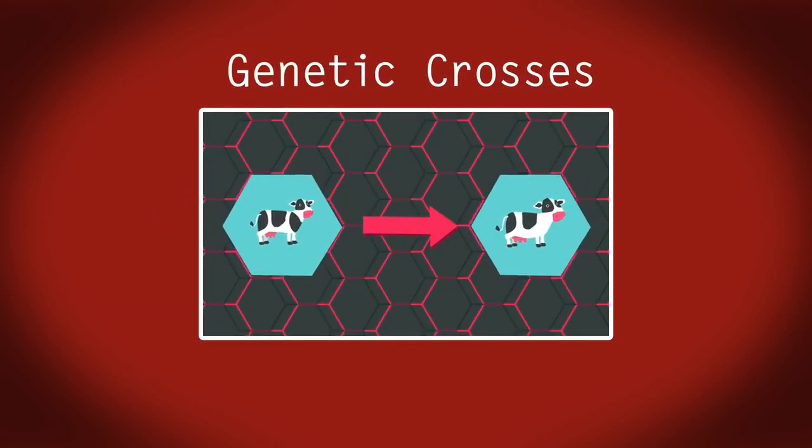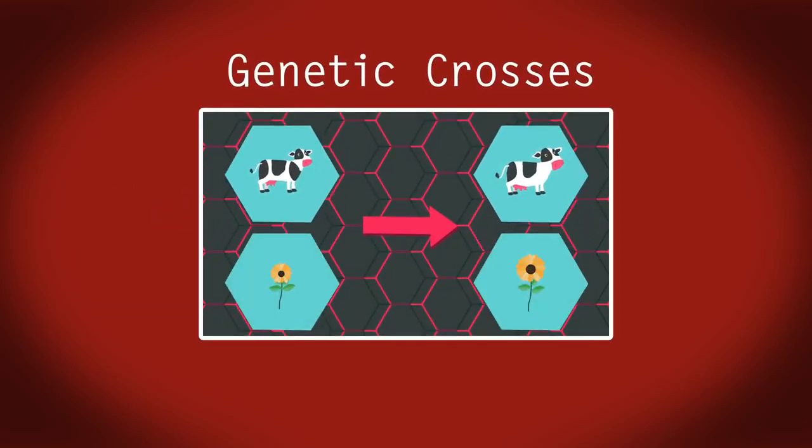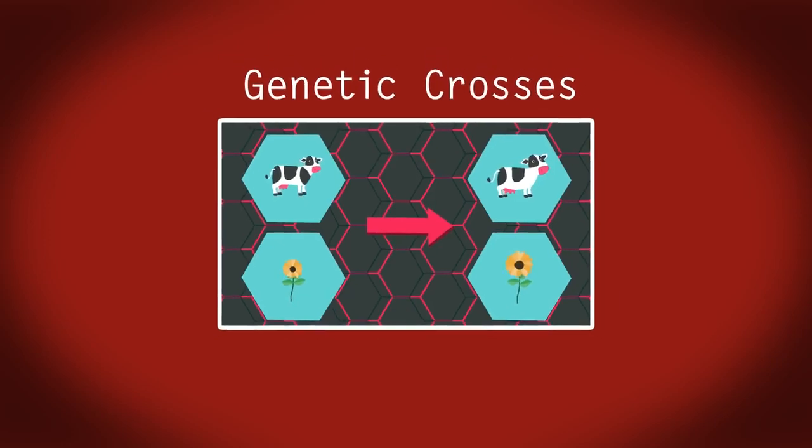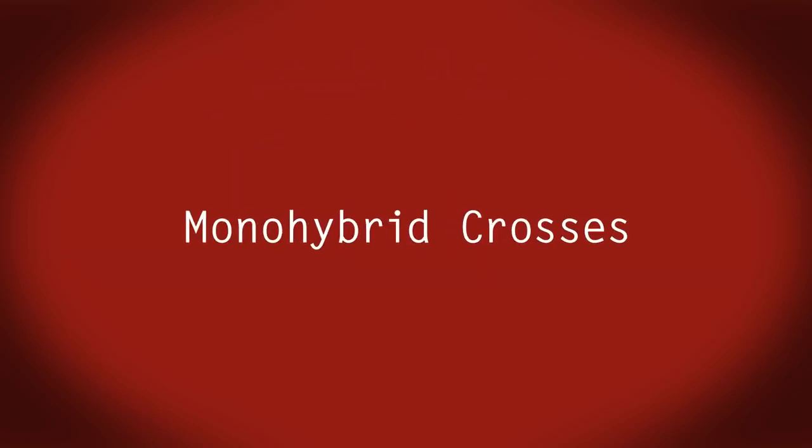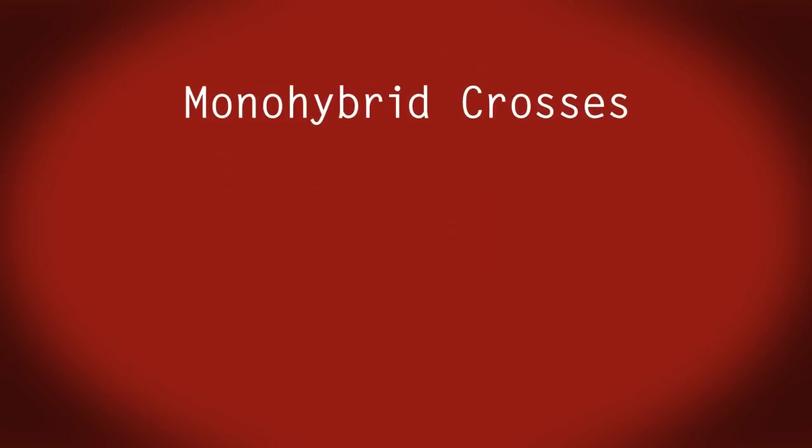In our genetic crosses video, we looked at what happens when yellow pea pod and green pea pod parents are crossed. In this video we are going to look at monohybrid crosses using Punnett squares.